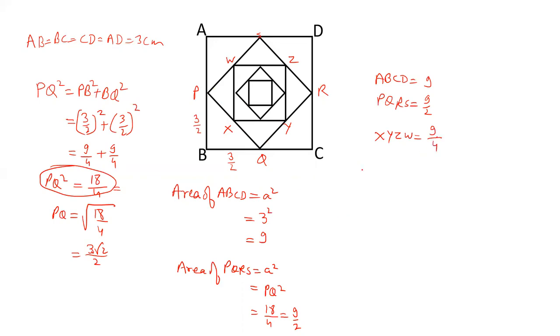And we have to calculate the sum of areas of all the squares. And that will be equal to 9 plus 9 by 2 plus 9 by 4 plus 9 by 8 and so on up to infinity.